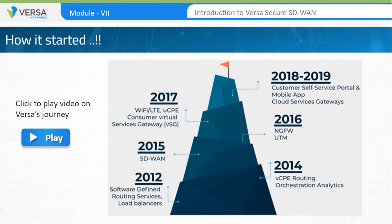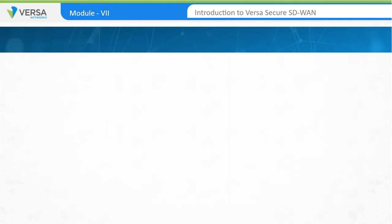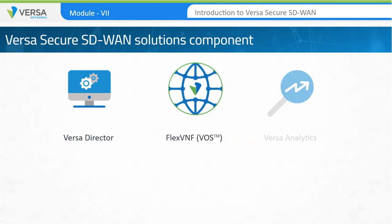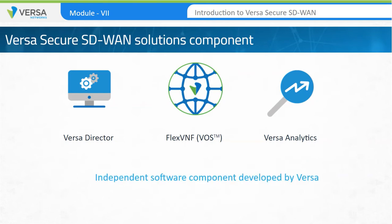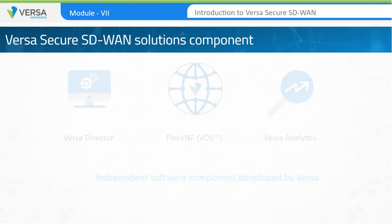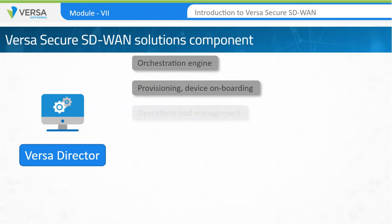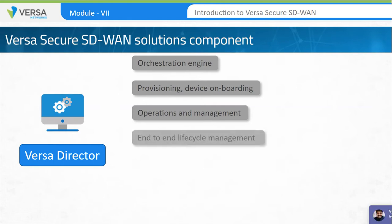Versa Networks consists of three main components: the Versa Director, a Versa Flex VNF, and Versa Analytics. All three components are independent software components developed by Versa Networks from the ground up. Versa Director is the orchestration engine. It owns provisioning, device onboarding, and operations and management. It is the component that makes the Versa solution software-defined. End-to-end lifecycle management of branch CPE software is done through Versa Director. This is the one single orchestration plane for various networking services.